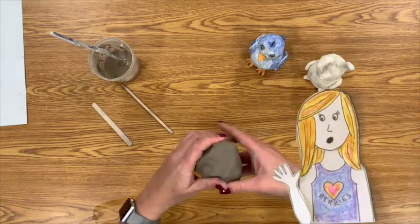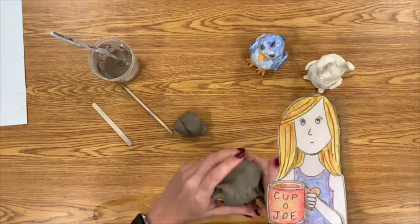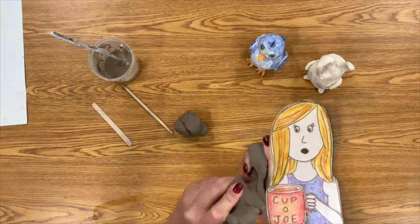Today I'm going to show you how to attach two pinch pots together to create a hollow form, and then I'm going to turn that hollow form into an animal.